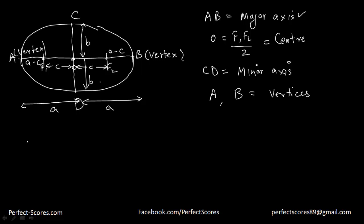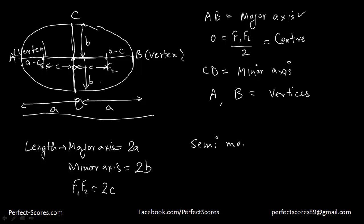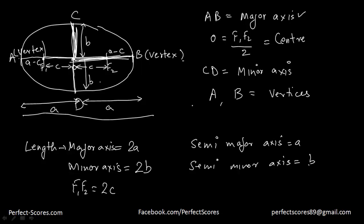The length of the major axis is equal to 2A, and the length of the minor axis is equal to 2B. The distance between the two foci is equal to 2C. There is also the semi-major axis, which is half the major axis and equals A, and the semi-minor axis, which equals B.